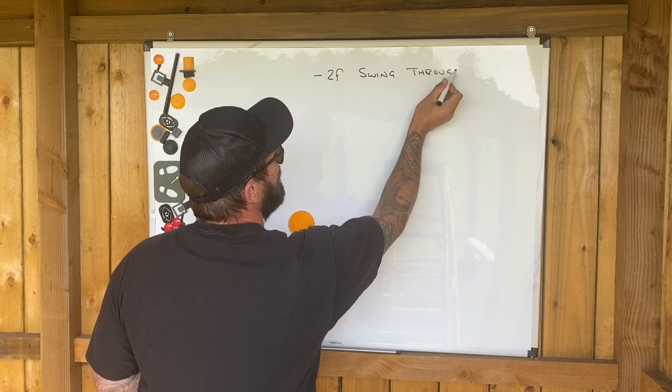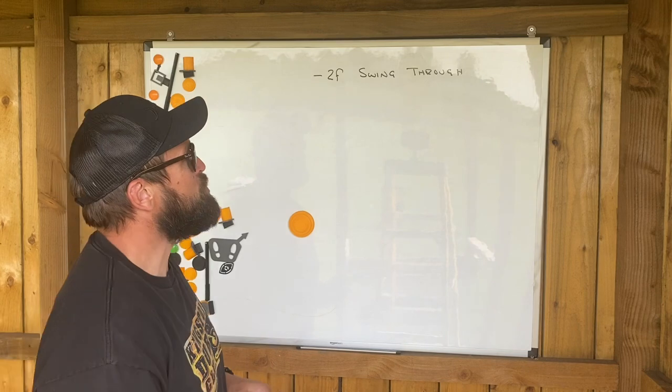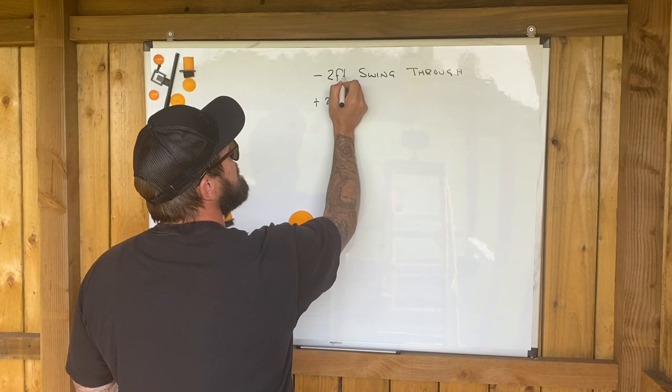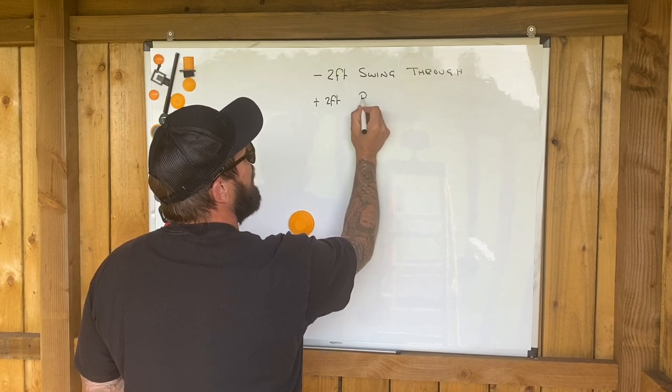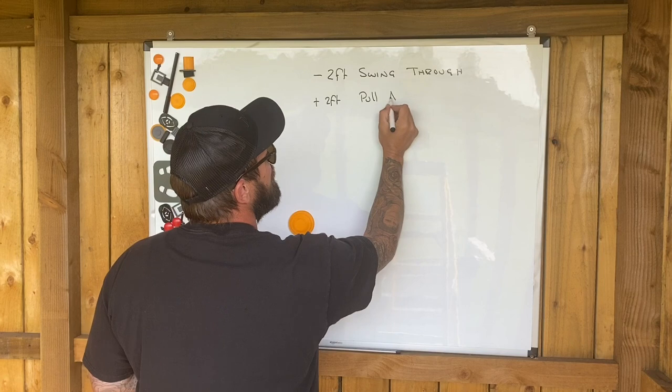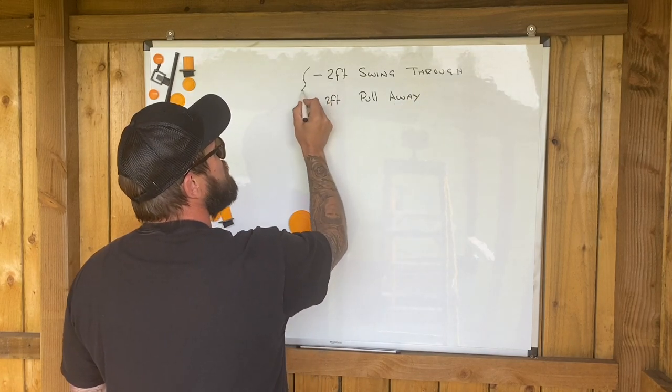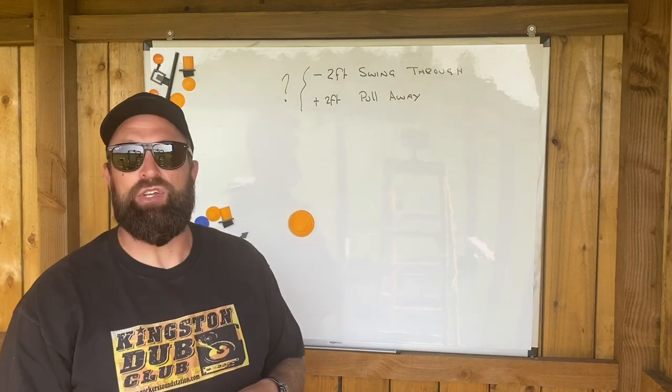Simply put, under two feet of visual lead I'm going to use swing through, above two feet I'm going to use pull away. If it falls dead on two feet, then it's completely my choice. There'll be other things like speed that come into play.